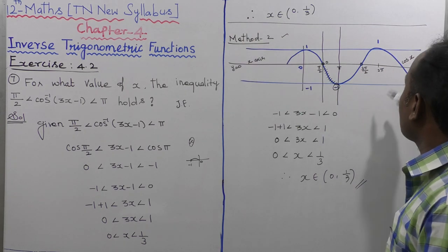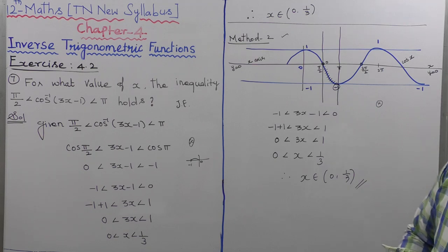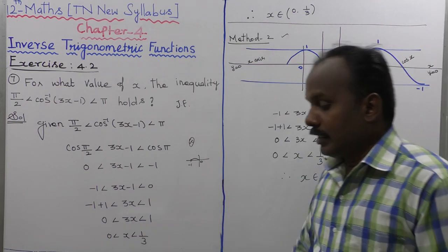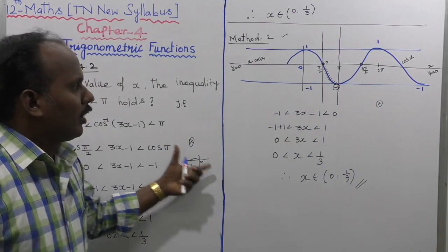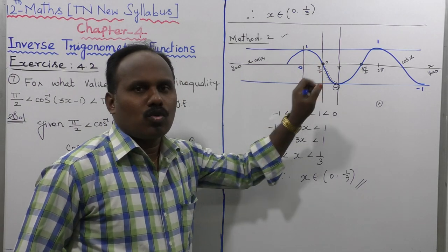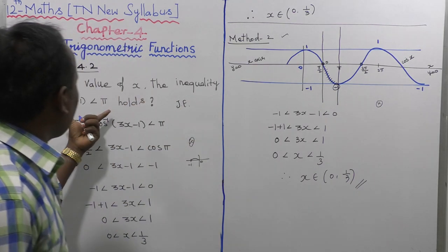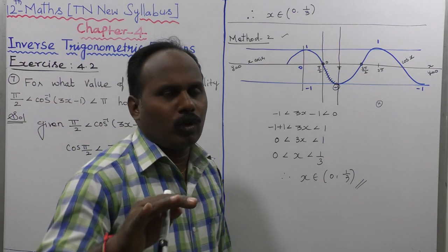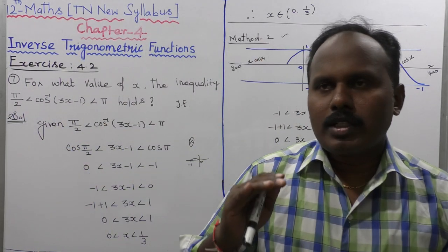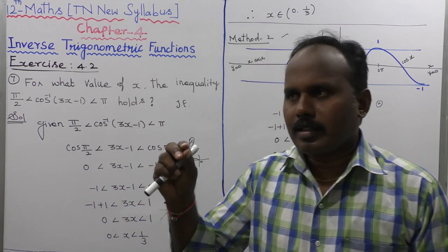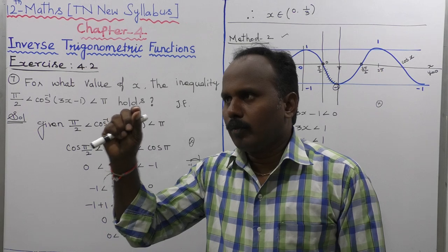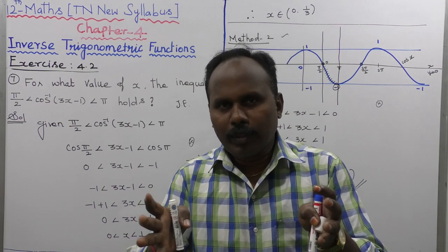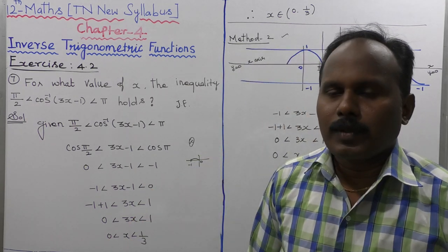That is clearly understood. The graphical method and the mathematical method both confirm the answer. This is a JEE question. In this chapter, just consider sin θ, cos θ — any sides, the limit exists. This is a full trigonometry discussion.